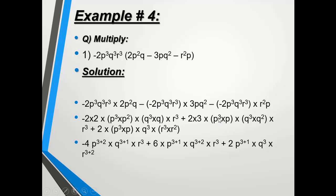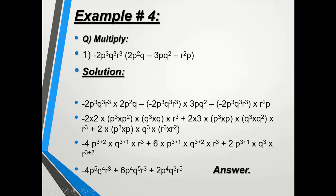Continuing the simplification: 2 × 3 = 6 for the coefficient; the powers are added as 3 + 2 for p, 3 + 1 for q, and r³ stays. The same procedure applies to the remaining expressions. In the final step, adding the powers: 3 + 2 = 5, 3 + 1 = 4, giving p⁵, q⁴, and r⁵ in the respective terms.